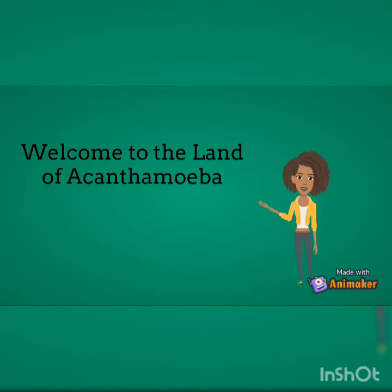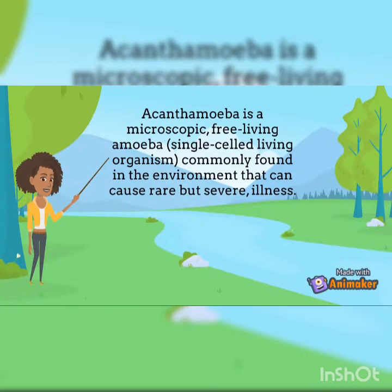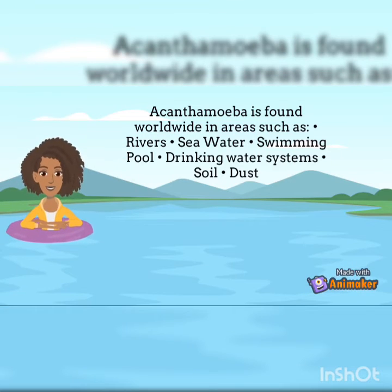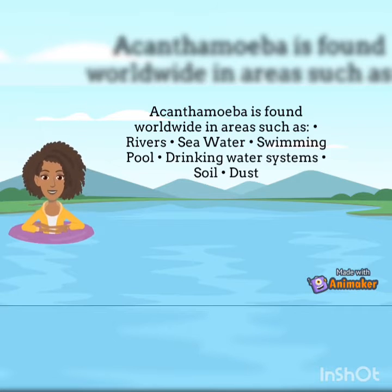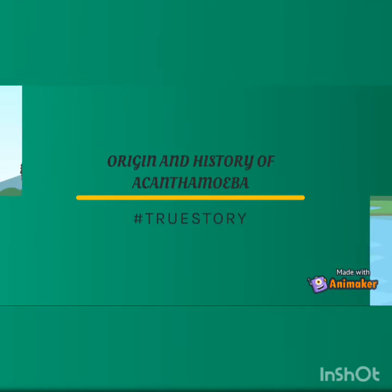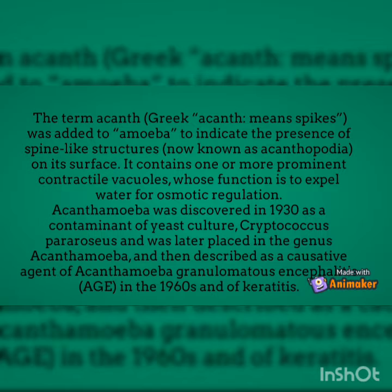Welcome to the land of Acanthamoeba. What is an Acanthamoeba? Acanthamoeba is a microscopic, free-living amoeba — a single-celled living organism — commonly found in the environment that can cause rare but severe illness. Acanthamoeba is found worldwide in areas such as rivers, seawater, swimming pools, drinking water systems, soil, and dust. The term 'acanth,' from the Greek meaning spikes, was added to 'amoeba' to indicate the presence of spine-like structures, now known as acanthapodia, on its surface.